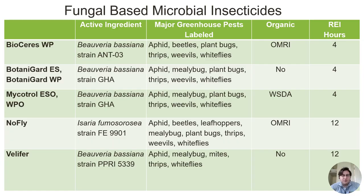The two primary active ingredients when it comes to fungal-based microbial insecticides are Beauveria and Isaria. Here are various options commonly found in the market. As you can see, they cover a wide range of insects. They do vary in their organic status and also in their REI.